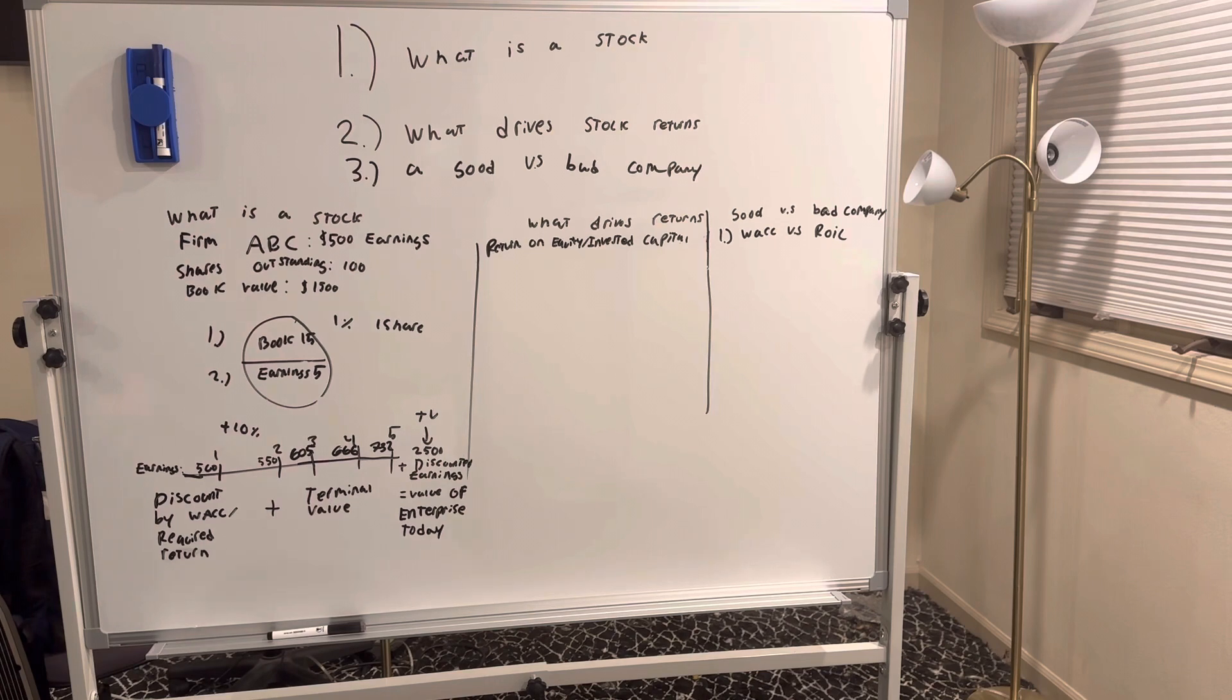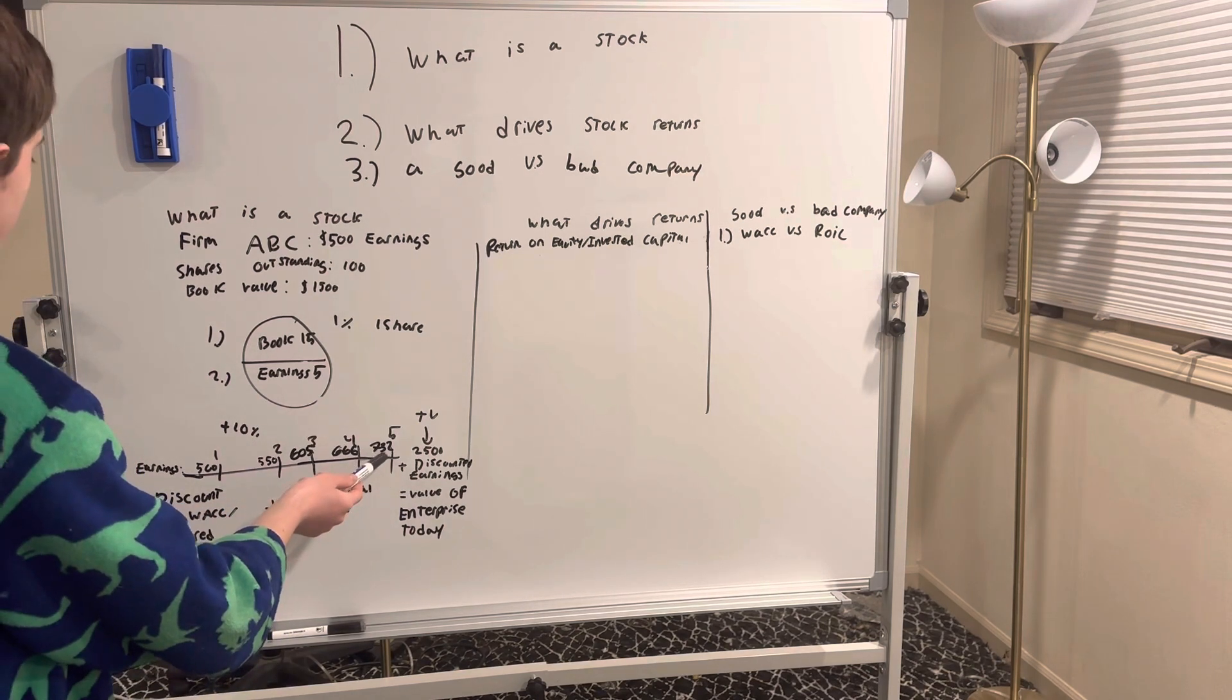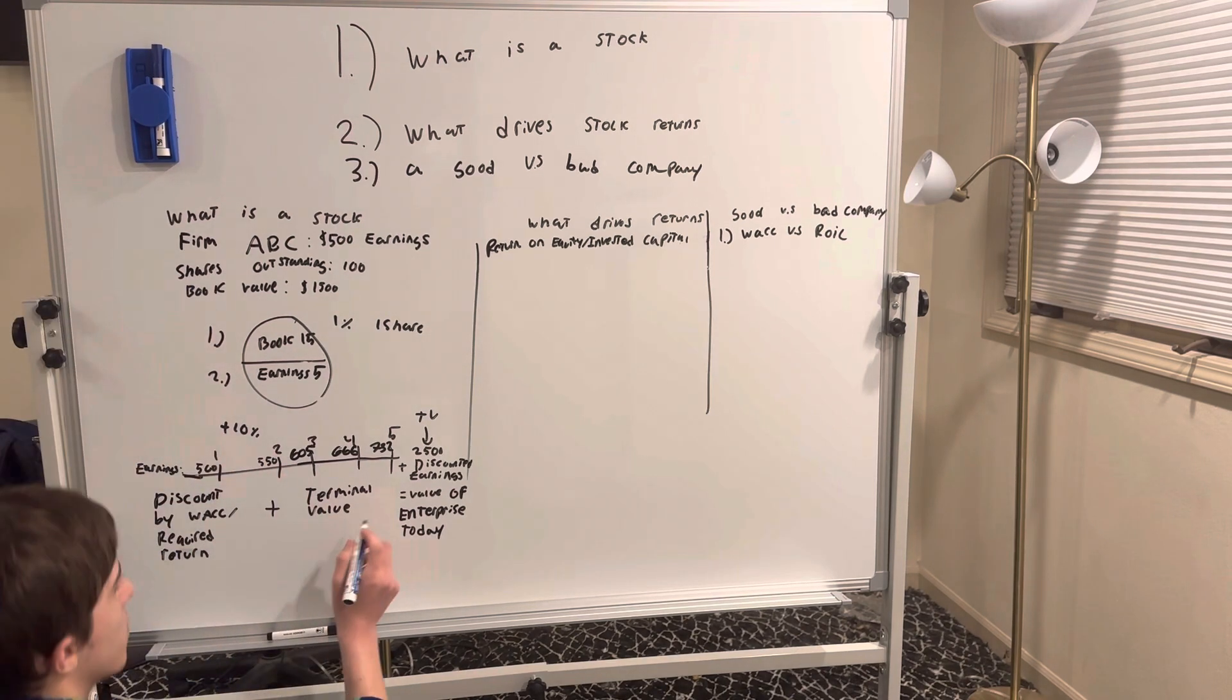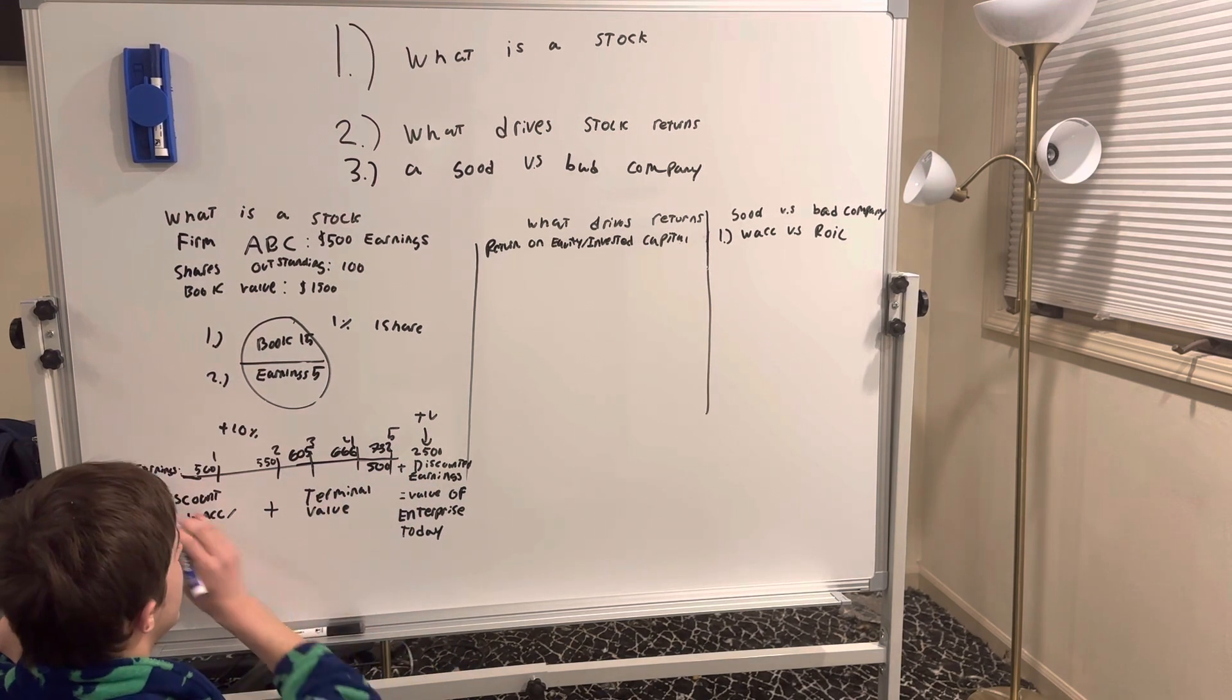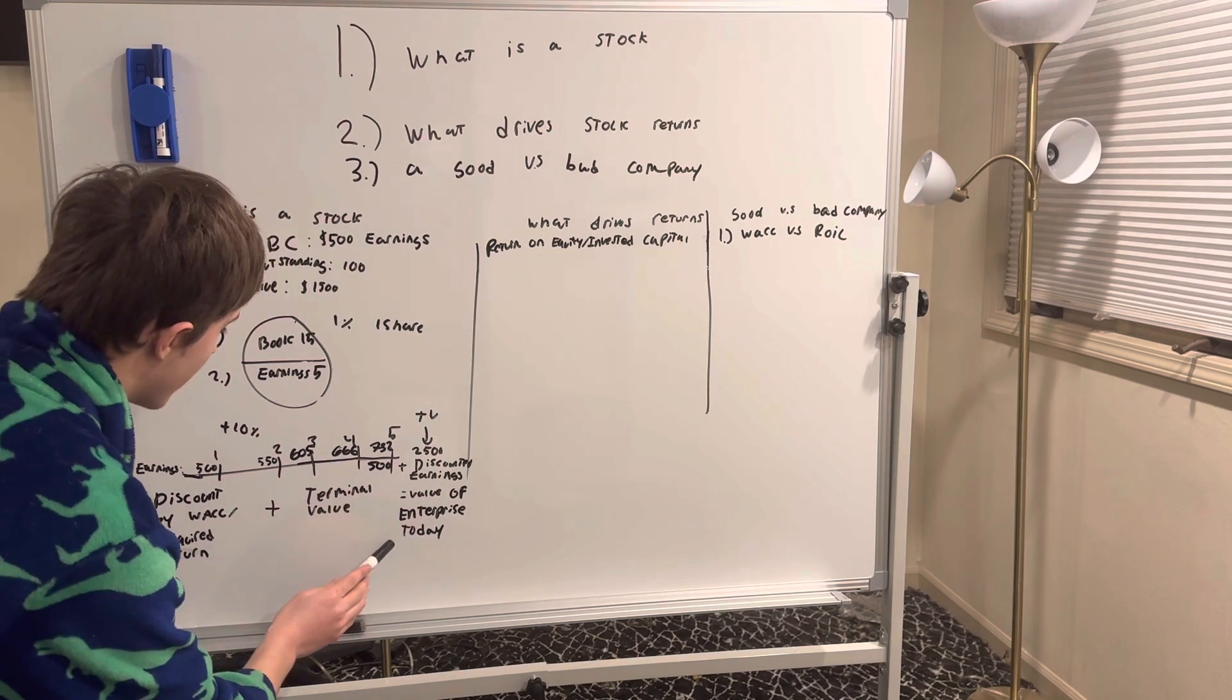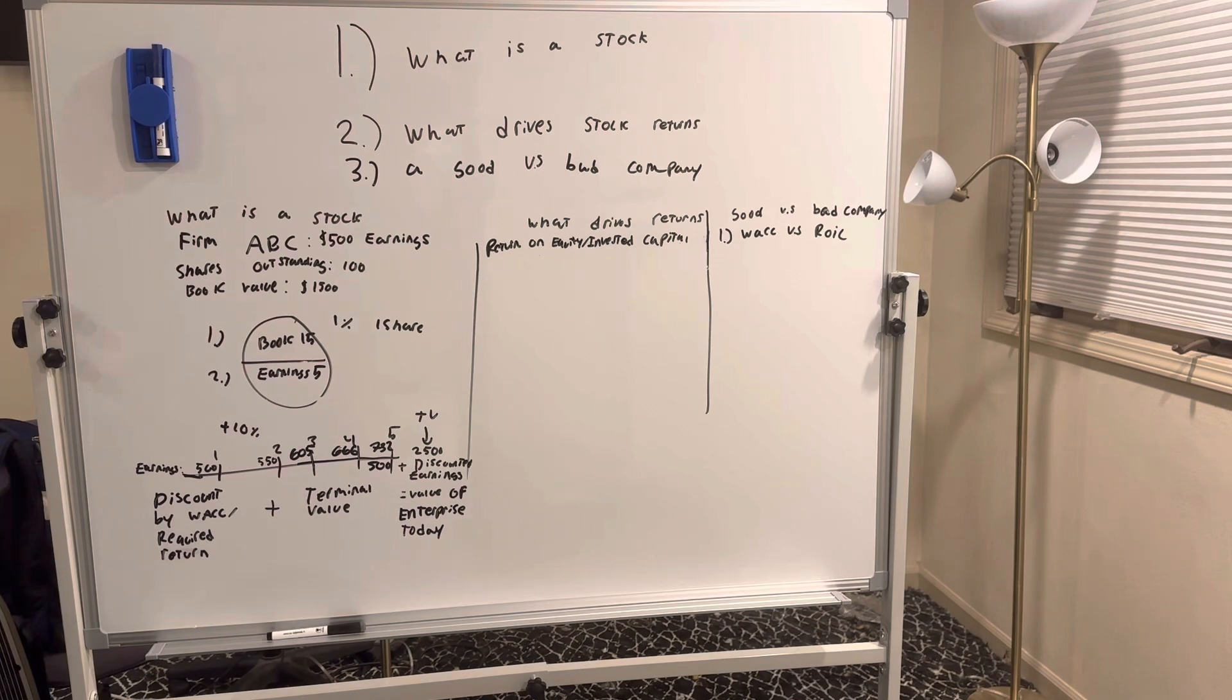So then we would take that terminal value, add in the discounted earnings in the past five years. We discount these yearly because money in five years isn't worth $732 today. In five years it'll be worth less than what it's worth to us today. So maybe this is worth $500 to us today, paying $500 today to get $732 in five years. We add all that back up, and that'd be the entire value of the enterprise today, the present value of the enterprise. Obviously we'd have to divide by the shares outstanding, and then that would be the value of each share. So that is what a stock is.